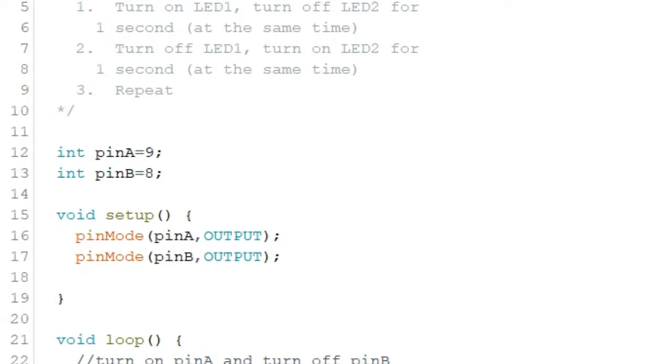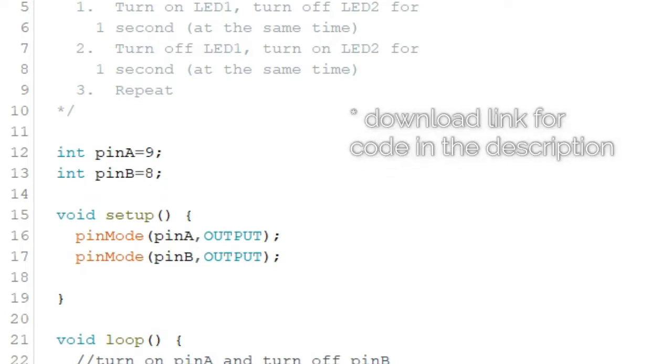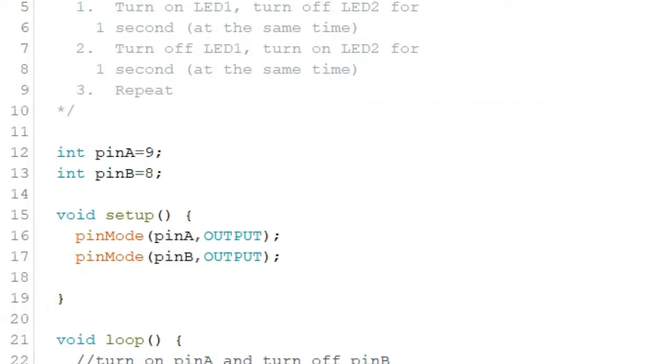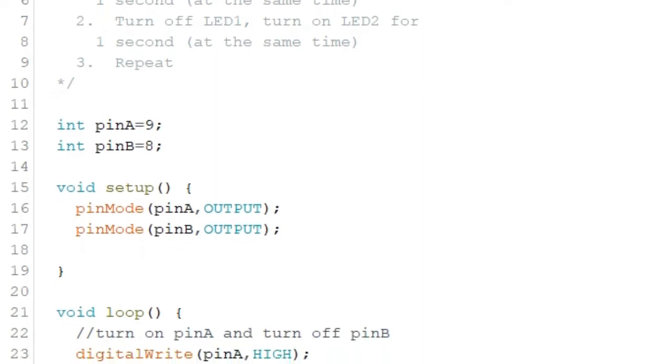Next in the setup function, we simply set our two variables as output pins. We can do that by writing a pin mode command for each of the variables. So we have pinMode(pinA, OUTPUT) and for pin B we write pinMode(pinB, OUTPUT). Note that we type in a semicolon after each pinMode statement.